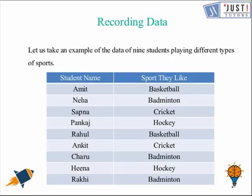Now, say you have been given the data of 9 students playing different types of sports. This is how we can record the data. You can see that in the tabular form, on the left-hand side the student name is mentioned, and on the right-hand side the sport they like is mentioned.